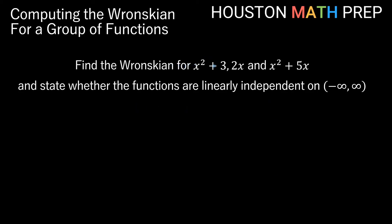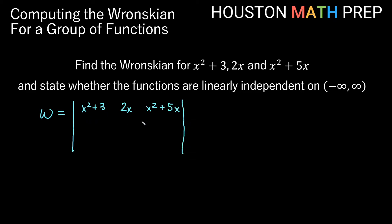Now let's find the Wronskian for three functions: x²+3, 2x, and x²+5x. Our Wronskian will be a 3×3 determinant. The first row is x²+3, 2x, and x²+5x. The second row is their derivatives: 2x, 2, and 2x+5. The third row is the second derivatives: 2, 0, and 2. In order to compute this Wronskian, you'll need to know how to do 3×3 determinants.